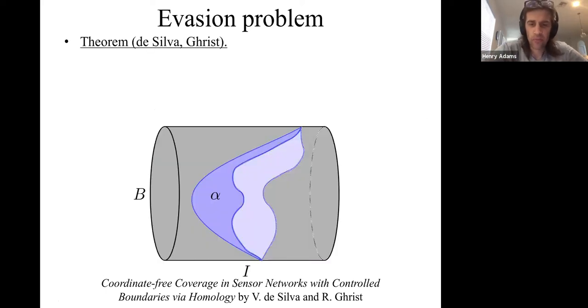In prior work, Vin de Silva and Robert Ghrist have shown that you can give a one-sided condition, which sometimes allows you to guarantee that there's no evasion path. Here's how they do it. You try to find a blue sheet alpha that wraps around this cylinder. It separates time zero on the left from time one on the right. And you want this blue sheet alpha to be in the region covered by the sensors.